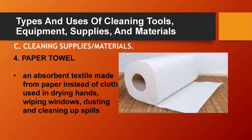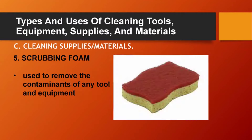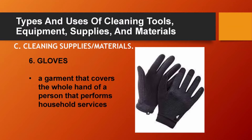Paper towel, an absorbent textile made from paper instead of cloth, used in drying hands, wiping windows, dusting, and cleaning up spills. Scrubbing foam, used to remove contaminants from any tool and equipment. Gloves, a garment that covers the whole hand of a person that performs household services.